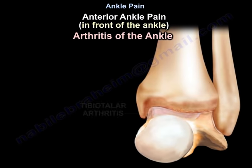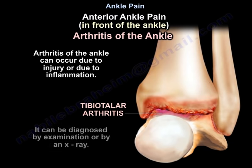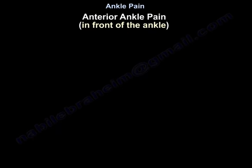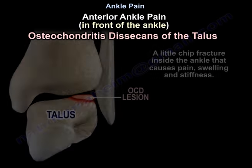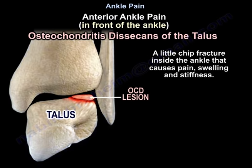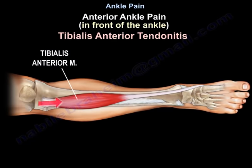Arthritis of the ankle can occur due to an injury or inflammation, and can be diagnosed by examination or by an X-ray. Osteochondritis of the talus is a small chip fracture inside the ankle that causes pain, swelling, and stiffness. Tibialis anterior tendonitis is an overuse condition.